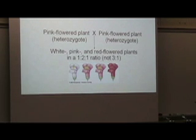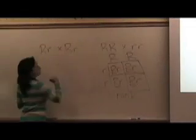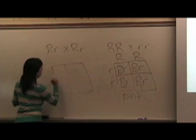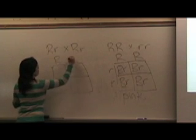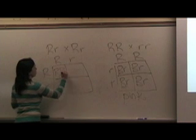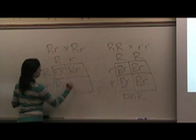So now I have big R, little r crossed with big R, little r. I'm going to make my Punnett square. Each parent can give either a big R or a little r. And then I fertilize, keeping my big R's first.